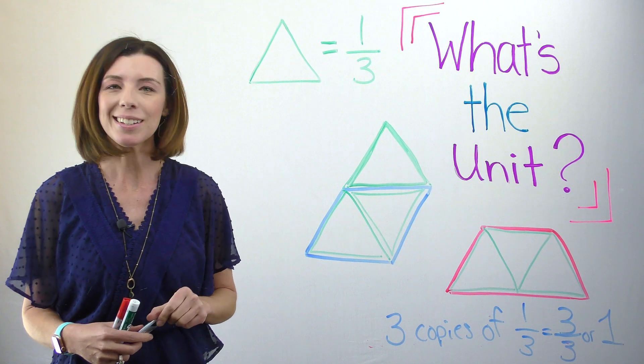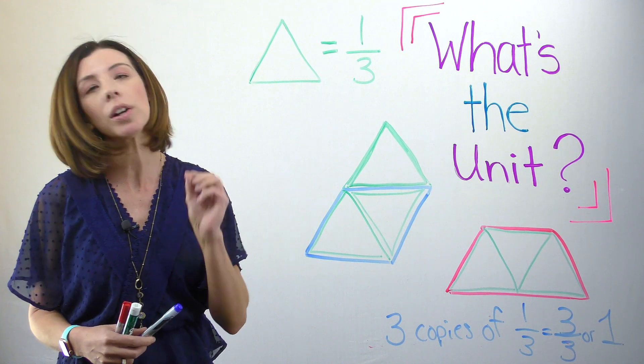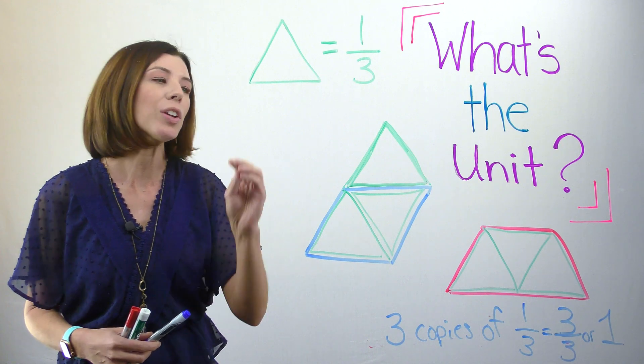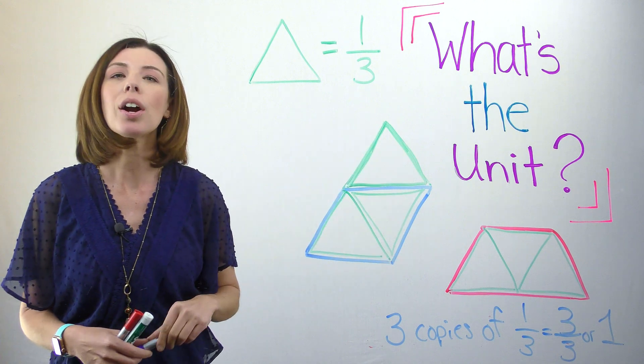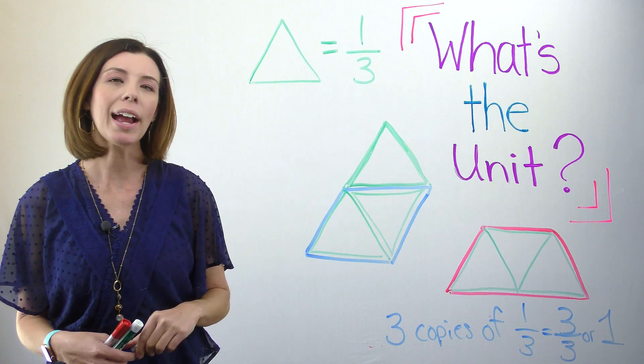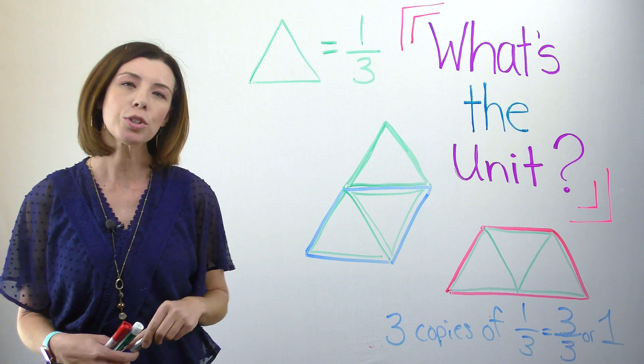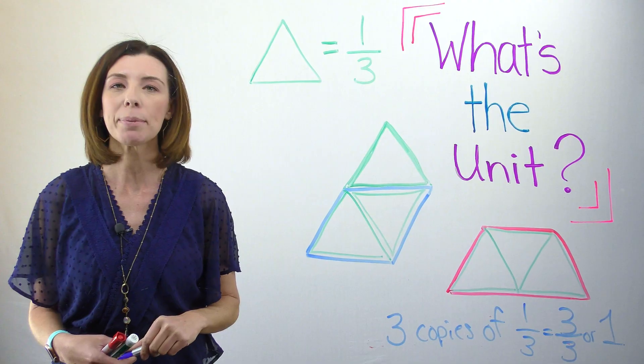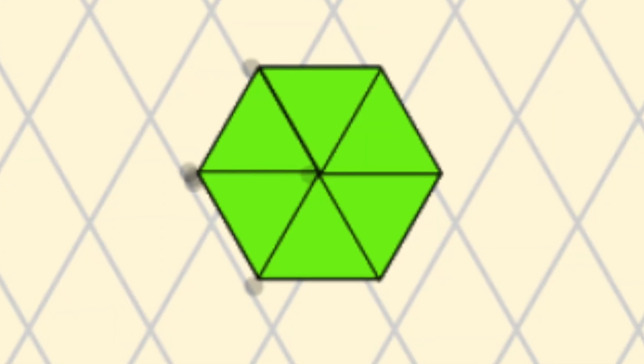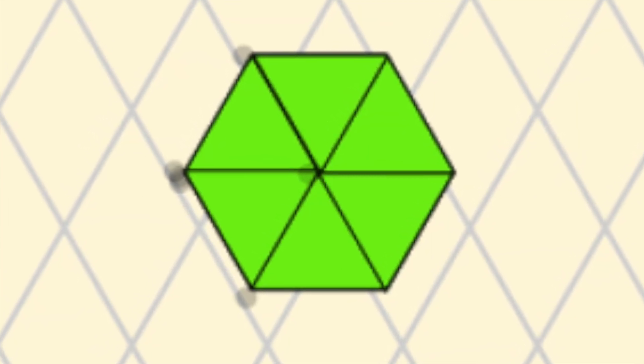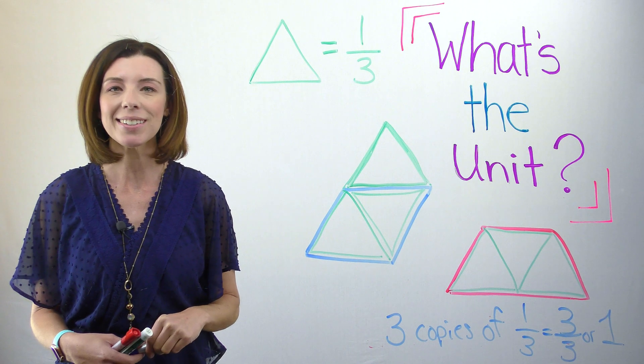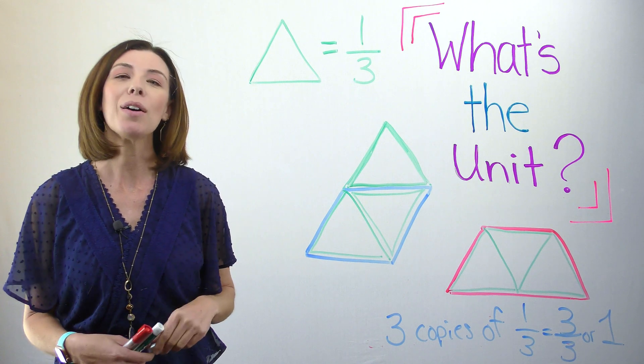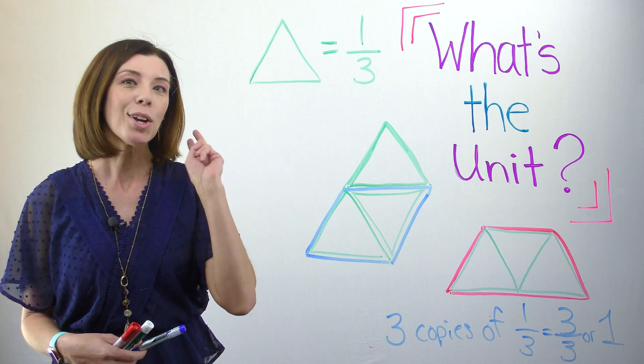Now let's do the yellow hexagon. Again, remember, it's no longer one. It's going to have a different value because we've changed our unit. I think I'm going to try taking my green equilateral triangles and fitting them inside the yellow hexagon similarly to how I did with the red trapezoid. You can see here that there are six green equilateral triangles that fit inside the yellow hexagon, six copies of one third, which would give me two holes. So the yellow hexagon is really called two holes when this is the unit.